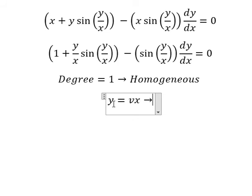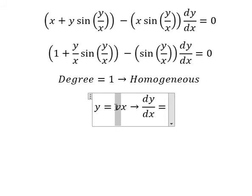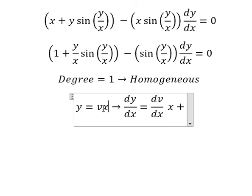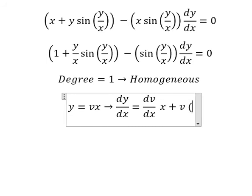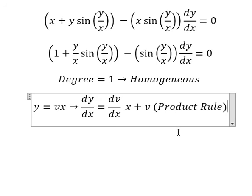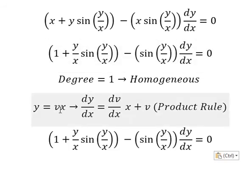Later, we do the first derivative for both sides. This one we have dv over dx multiply by x, this one we have number one, so we have v. And that is the product rule of the derivative.